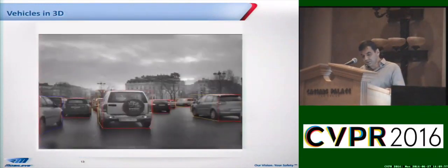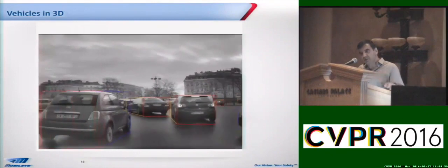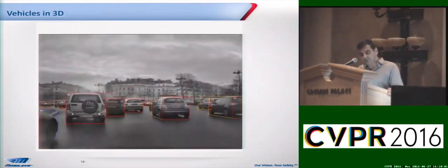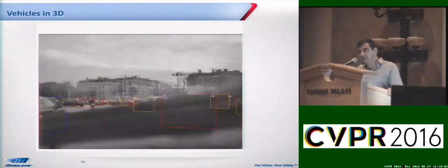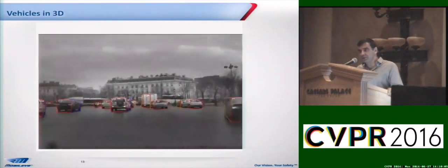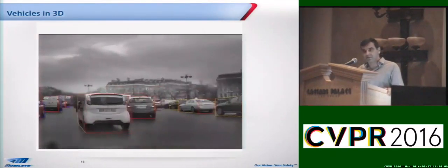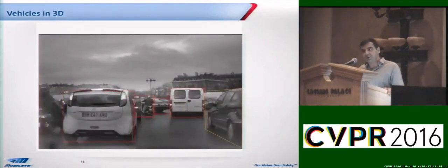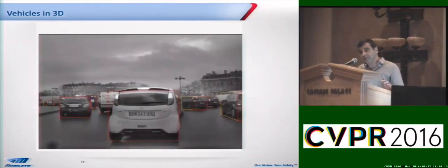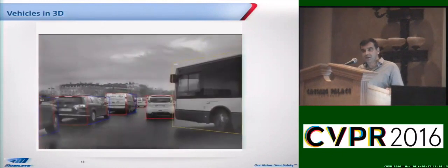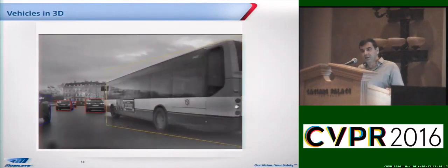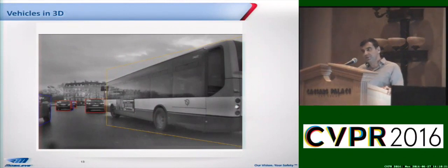Let me show you some more clips so that you can appreciate the complexity and why it is needed. When you see an academic paper doing vehicle detection and putting a bounding box around a vehicle, that's not useful. You really need to figure out how to put a 3D bounding box around it, and that's tricky — because this 3D bounding box is not always visible. Sometimes you see only the rear of the vehicle, sometimes only the side, sometimes both.